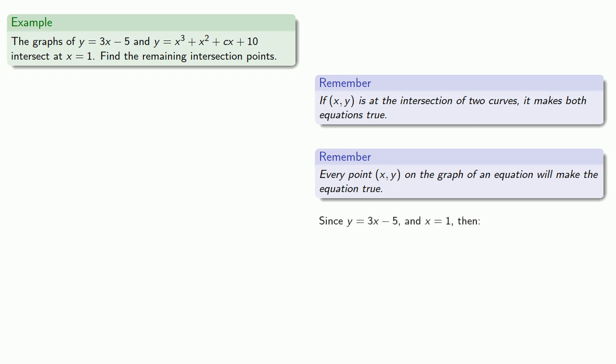And since y equals 3x minus 5 and x is equal to 1, we can find y. And so the intersection point is at x equals 1, y equals negative 2, or at (1, negative 2).